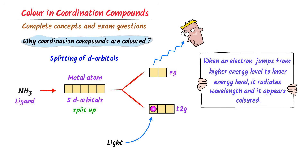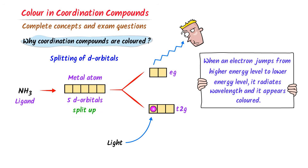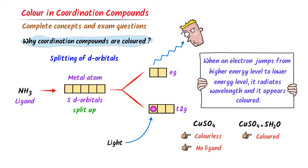Remember this very important point: both a metal atom and a ligand are required to form coordination compounds. Only then will we be able to see colored compounds. For example, copper sulfate is colorless because it has no ligand and no splitting of d-orbitals is possible. While copper sulfate·5H2O is colored because it has the ligand H2O and splitting of d-orbitals is possible.